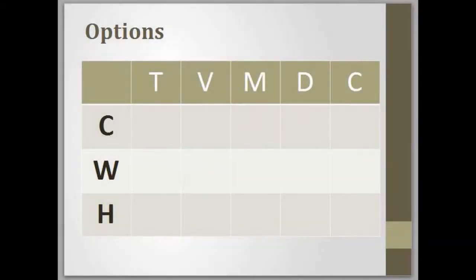The easiest way I've seen is to graph it out. Basically what you want to do is use the acronym 'TV Makes Dumb Commercials,' and you'll run that along your top column from left to right.